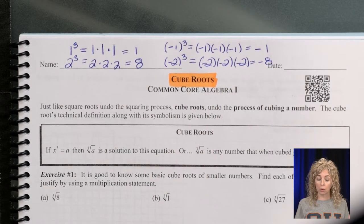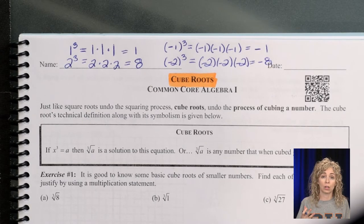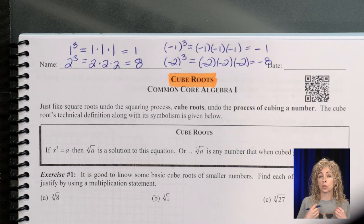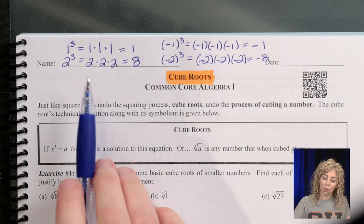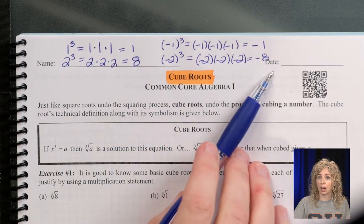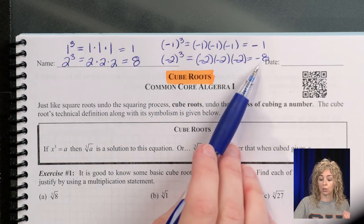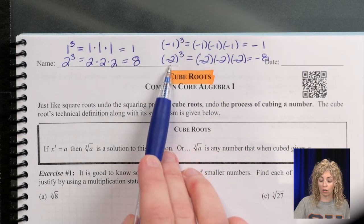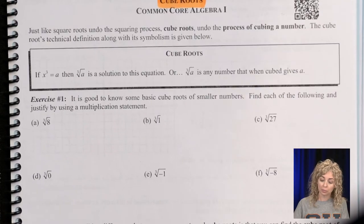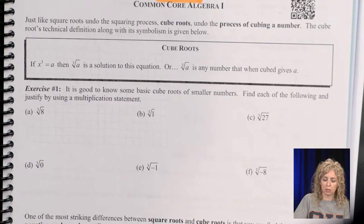With square roots, whether we square positive or negative, we always end up with a positive answer, so we can only take square roots of positives. But when we cube things, we can get both positive and negative answers. Therefore, we can take the cube roots of negatives, because we can undo this and get us back to here. Down below, he explains what a cube root is, so you can take a minute to read that.